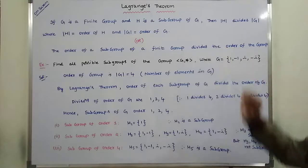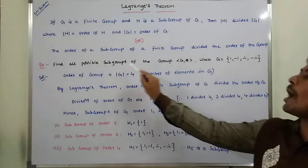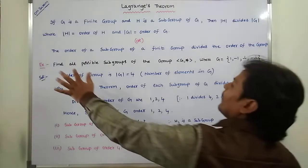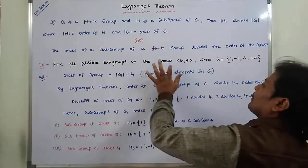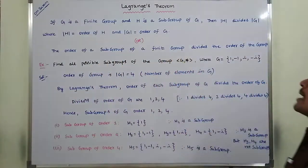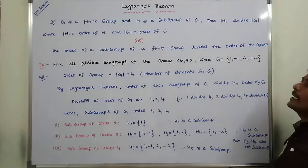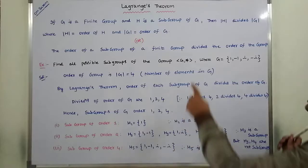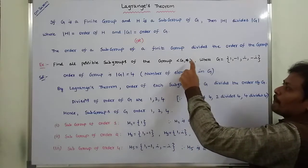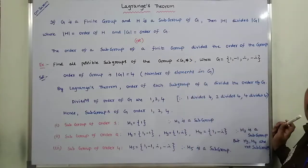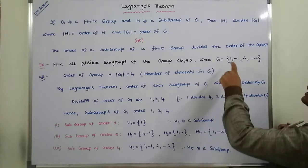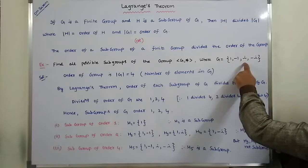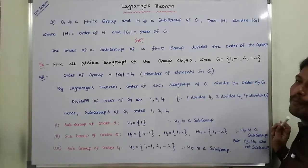By using this definition, we have to solve this example problem. Find all possible subgroups of the group G star, where G is equal to the set {1, -1, i, -i}. Here G is a group with respect to the operation multiplication, and G contains four elements: {1, -1, i, -i}.